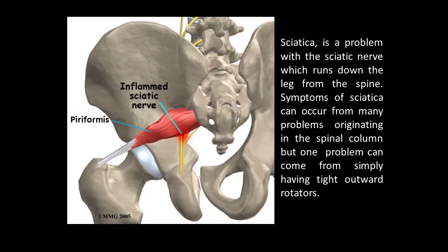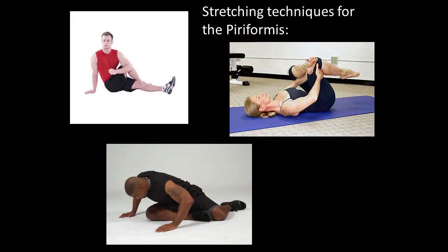Sciatica, or piriformis syndrome, is a problem with the sciatic nerve which runs down the leg from the spine. Symptoms of sciatica can occur from many problems originating in the spinal column, but one problem can come from simply having tight inward rotators. Here are a few examples of techniques for stretching the piriformis muscle. The problem occurs when the piriformis muscle begins to put pressure on the sciatic nerve.